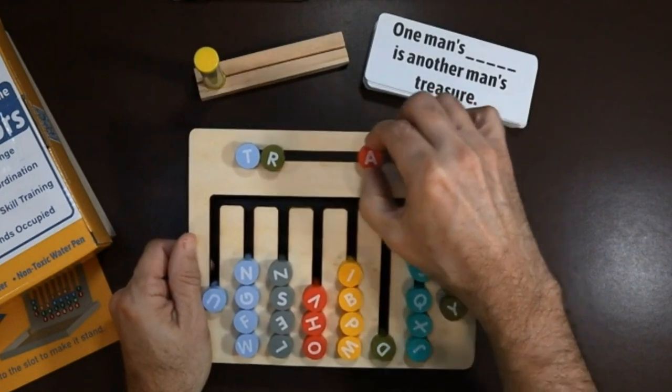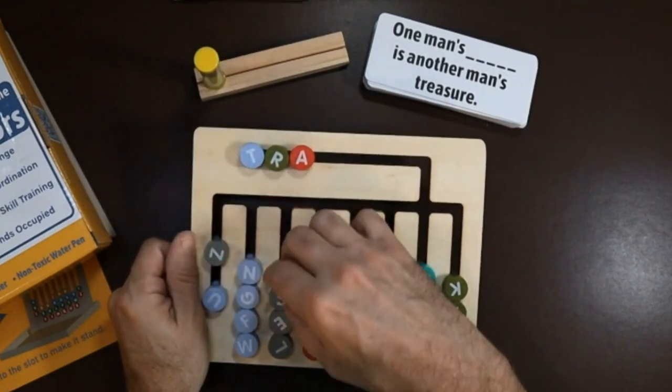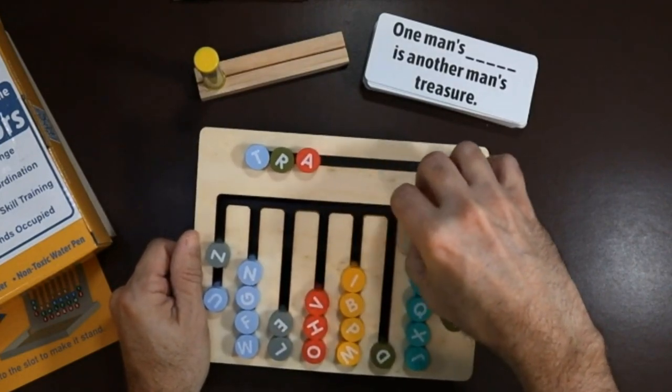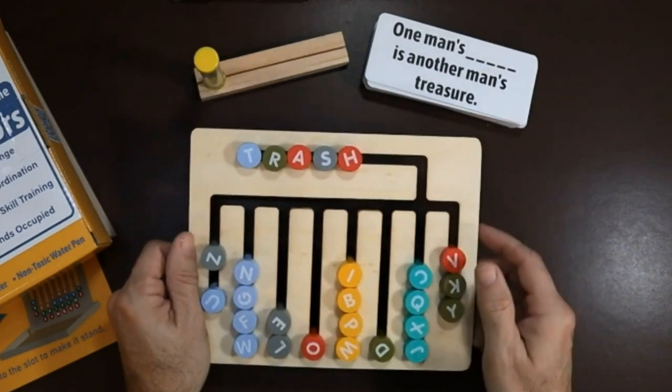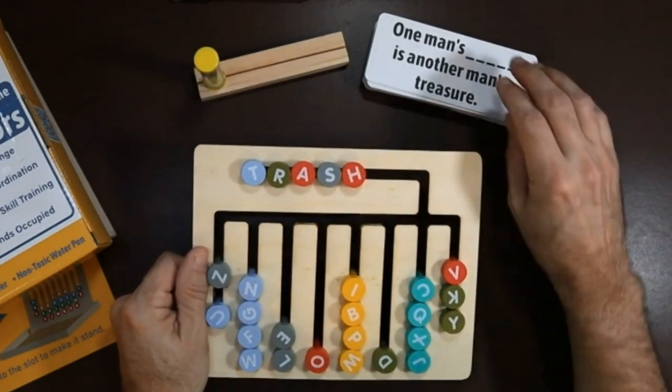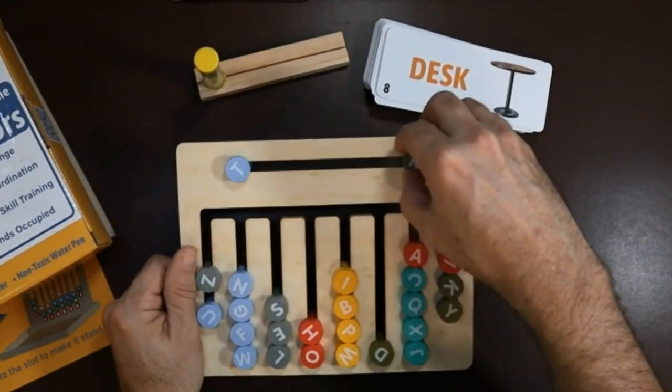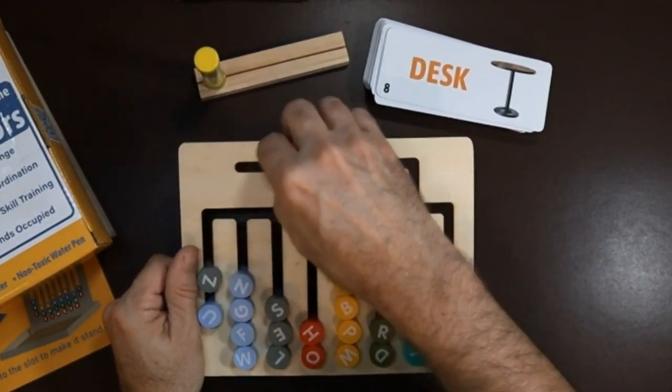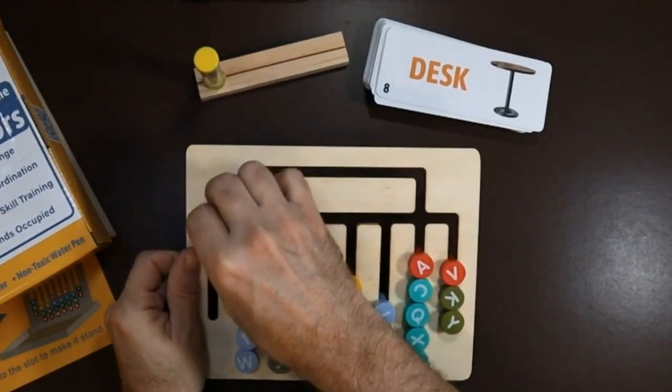So then you got A, and then let's see, we got S. So we'll move our S here. And then our H is right there. So then the answer to that one is trash. So then we'll just reset the board. And of course the game will be different every time they play it based on where these pieces get put.